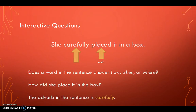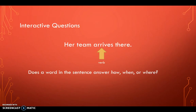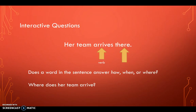I believe we have one more: Her team arrives there. First, I want you to find the verb in the sentence — not the adverb, the verb. The verb in that sentence is arrives. Now, does a word in the sentence answer how the team arrives, when the team arrives, or where the team arrives? There is a word that answers the question where her team arrived. Which word is the adverb? There — because it answers where does her team arrive. They arrive there. So the adverb in the sentence is there.